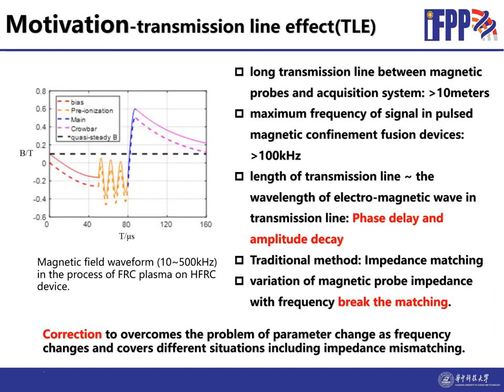Magnetic diagnostics is fundamental in magnetic confined fusion devices. In experiments, usually a long transmission line is connected between the magnetic probes and the acquisition systems. It can be longer than 10 meters. In some plasma devices, the maximum frequency of signals can be larger than 100 kHz. In this situation, the length of transmission line is comparable to the wavelength of electromagnetic waves in the transmission line. It causes a phase delay and amplitude decay of the signal.